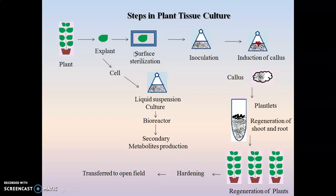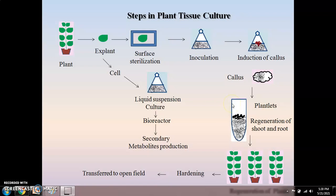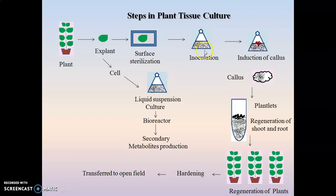The explant is cut into smaller pieces and surface sterilized. After surface sterilization, inoculation of the explant is carried out — the surface sterilized explant is transferred into a nutrient media containing different minerals, macronutrients, and micronutrients. The explant starts growing in this nutrient media, and incubation is carried out at a particular temperature for a specific time duration.